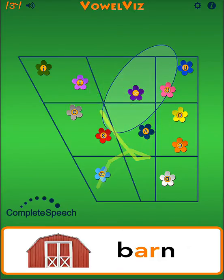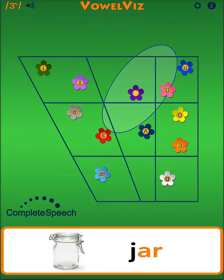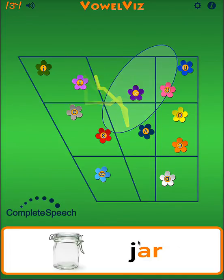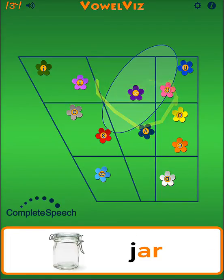Now let's try a mis-articulation. AAU, KAU, JAU. In mis-articulations, the tracking B does not make a clear transition from AH to ER. Rather, it stays on either the AH, or it travels to the right of the target, up towards the OO button.